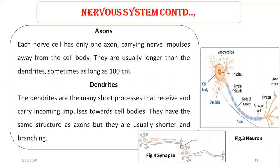Each nerve cell has only one axon, which carries nerve impulses away from the cell body. Axons are usually longer than dendrites, sometimes as long as 100 cm. The dendrites are the many short processes that receive and carry incoming impulses towards the cell body. They have the same structure as the axon but are usually shorter and branching — you can see small branches on the dendrites, whereas the axon does not have branches.